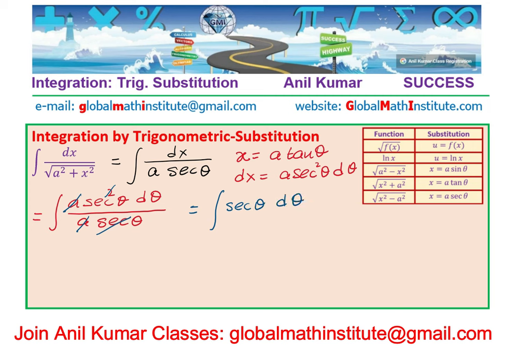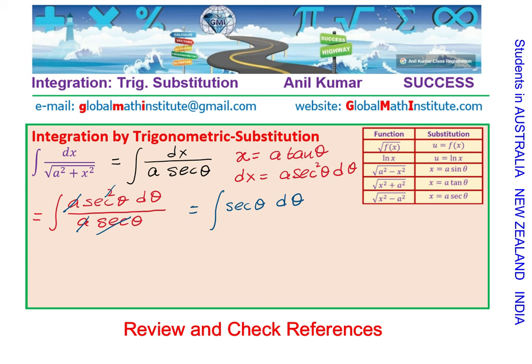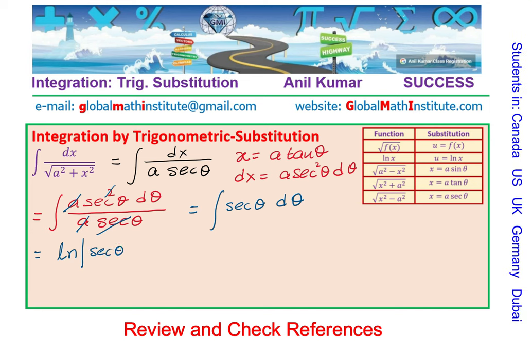As covered in our other videos on the integrals of secant θ and tan θ, the integral of secant θ dθ equals ln of the absolute value of secant θ plus tan θ, plus C. Note that secant θ and tan θ can be written in either order inside the absolute value.